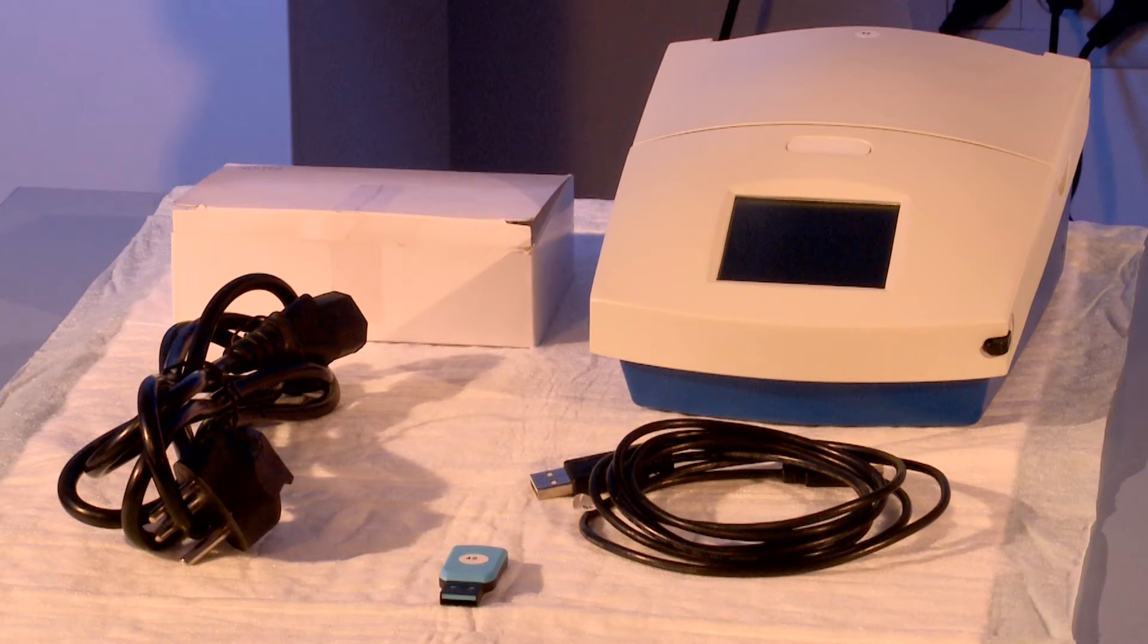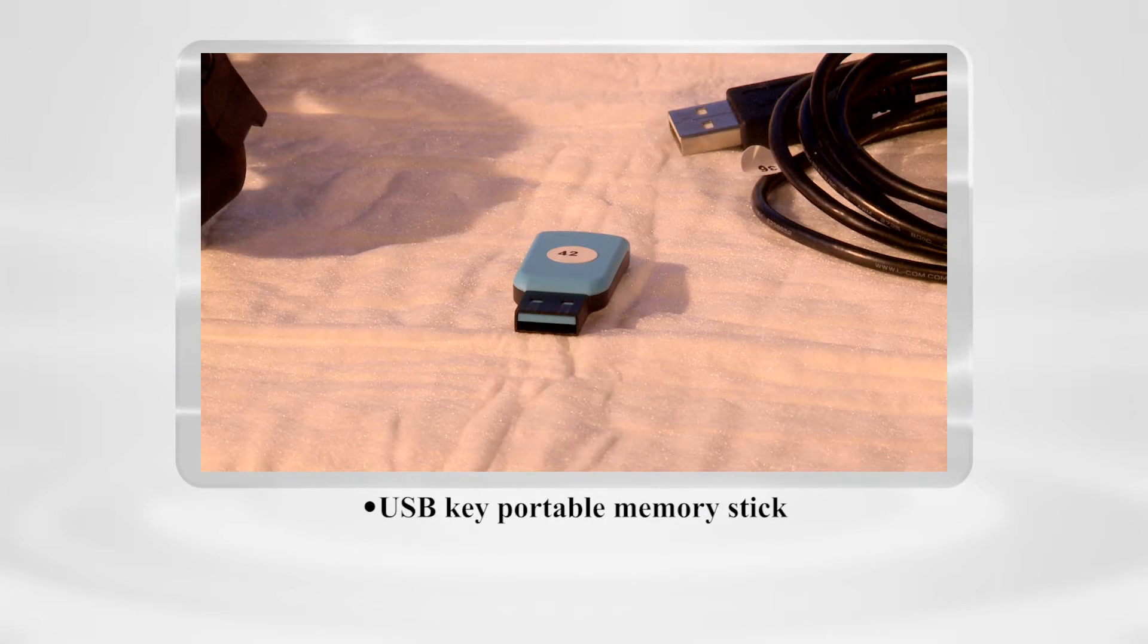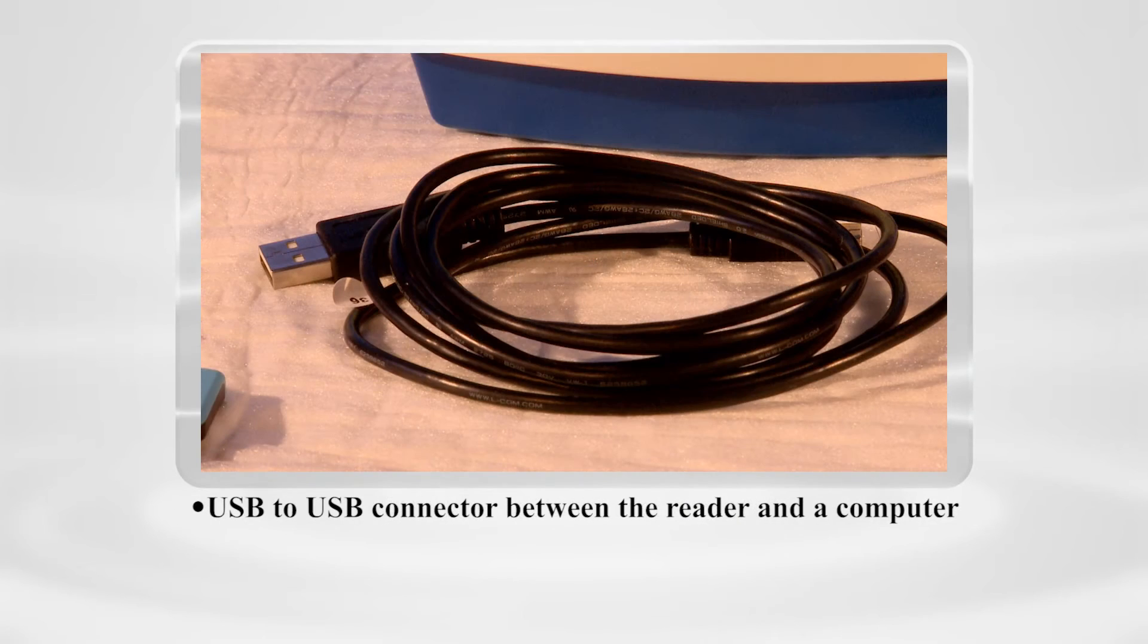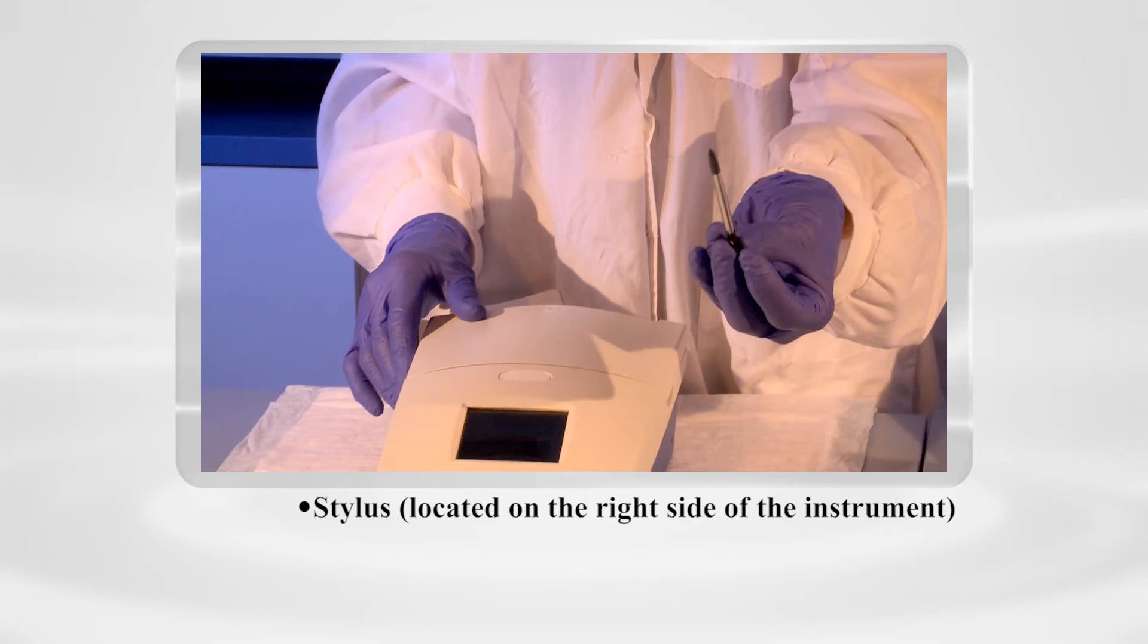The PC Run Reader comes with the following hardware: the PC Run Reader, the power cable and transformer, a USB key portable memory stick, a USB to USB connector cable between the reader and a computer, and a stylus located on the right side of the instrument.